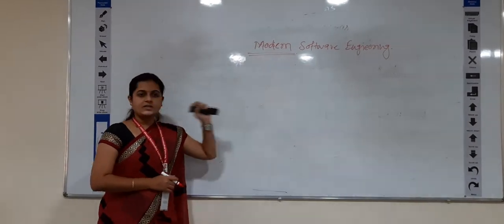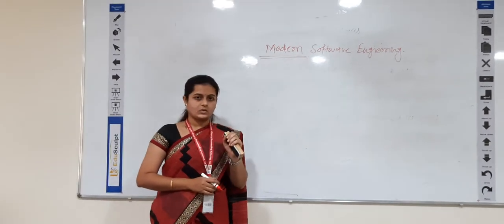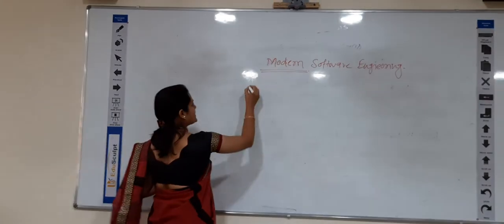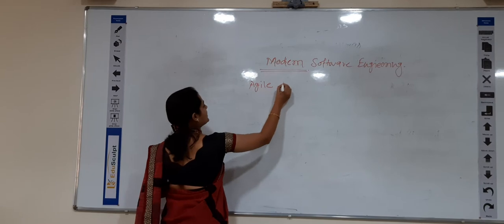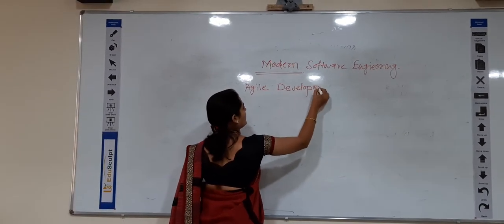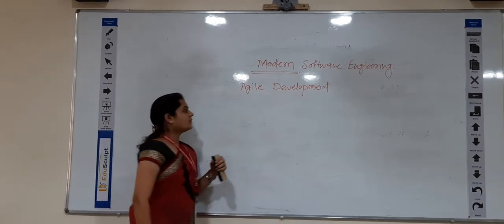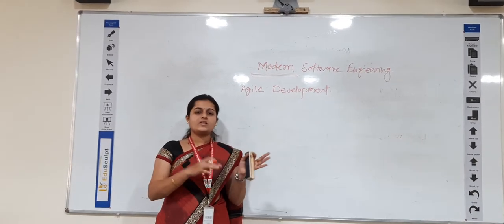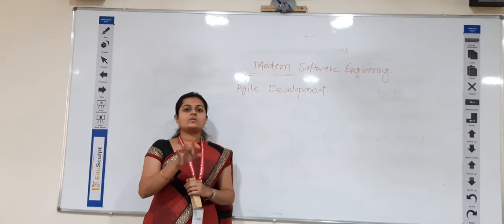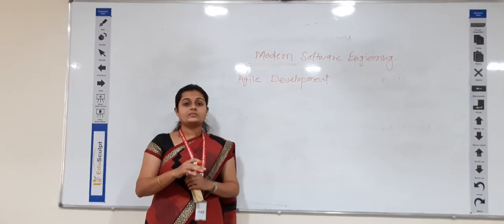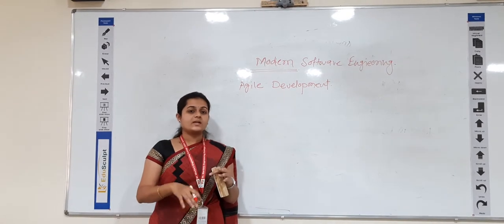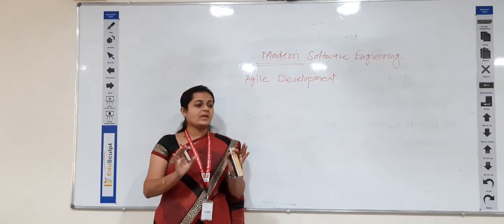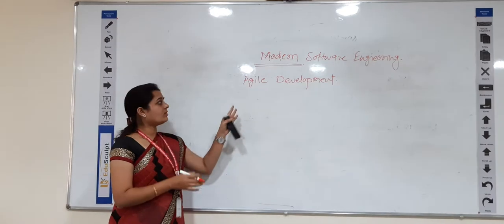Now, in this Modern Software Engineering subject, today we will be going to discuss Agile technology. In this subject, we will learn only one technology — Agile development. Traditionally, programmers used mostly the waterfall model or spiral model for developing any application. But nowadays, Agile development is the latest technology, or the latest development methodology. Let me tell you the history of Agile development.